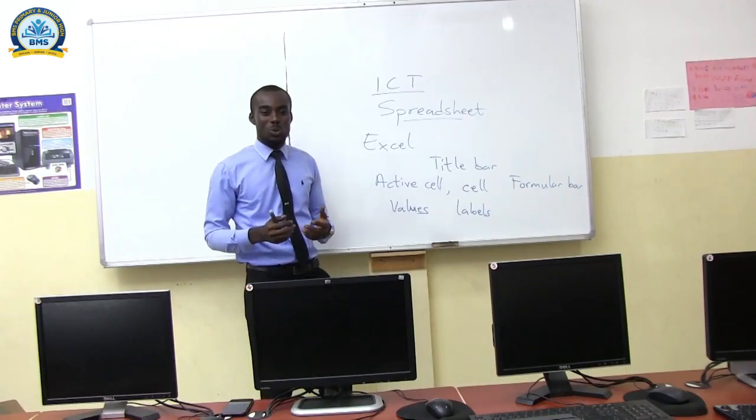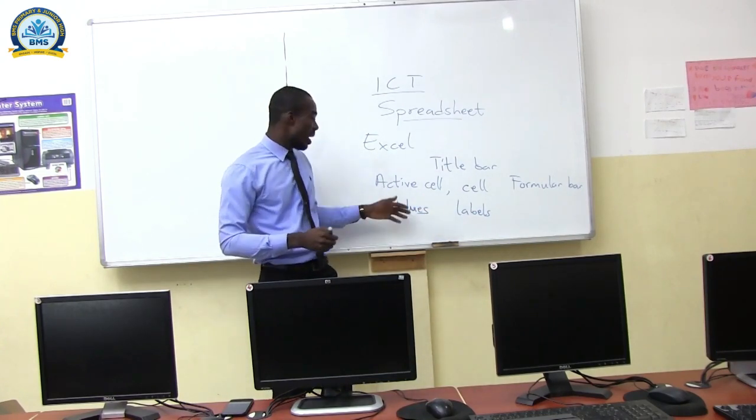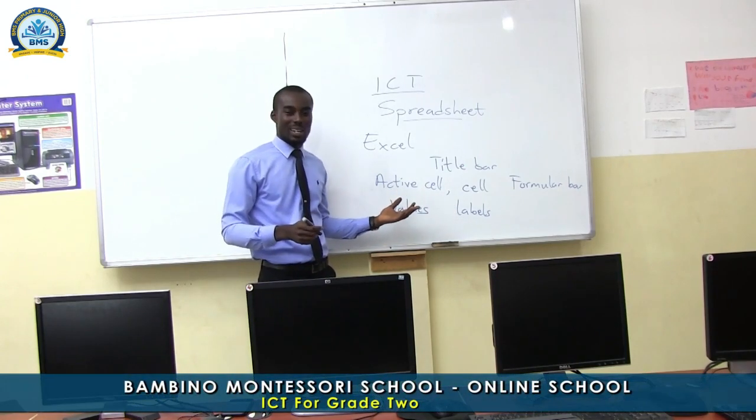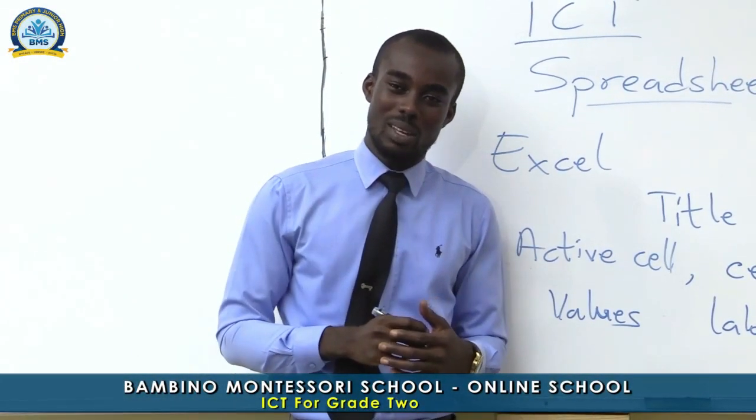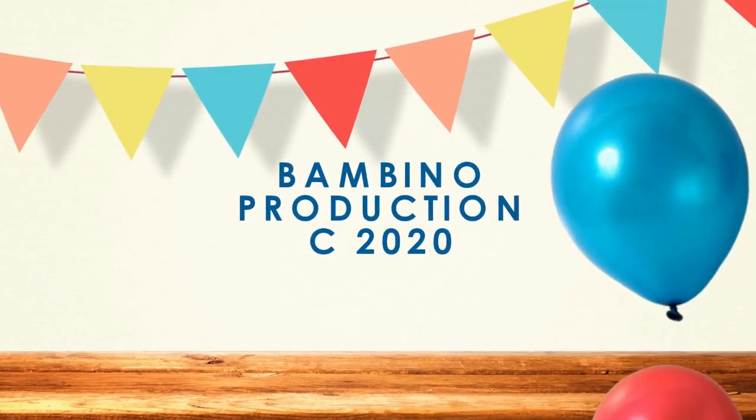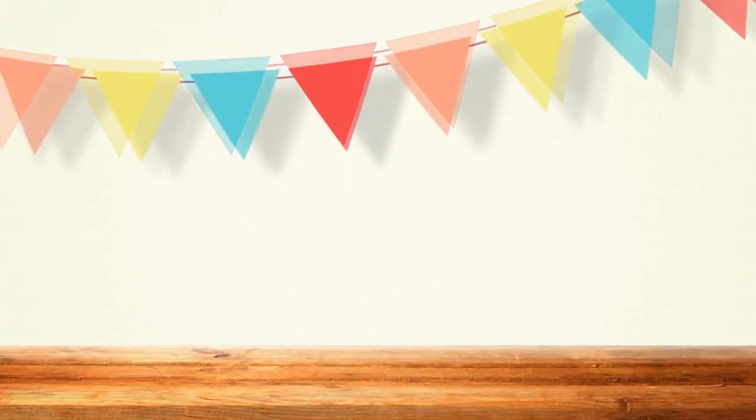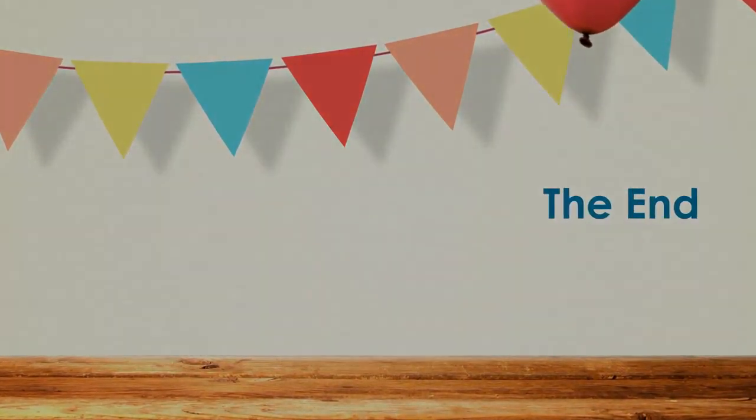We learnt how to set text and numbers in a cell. We mentioned values are numbers used in performing calculations on Excel, and labels are characters, letters, or numbers mixed together to name a particular cell. We didn't quite finish and had to go for a long break — but don't worry, I'll catch you up and give you a new topic next time we meet. Until then, please stay safe, stay at home, don't disturb mommy and daddy. I love you. Take care. Bye-bye.